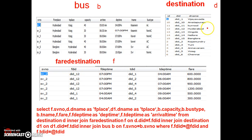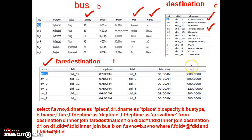The from place names and to place names are displayed from the destination table. Apart from that I want to display the capacity from the bus table, service number from the fare destination table, bus type (AC or non-AC) from the bus table, travel agency name from the bus table, fare from the fare destination table, departure time from the fare destination table, and arrival time from the fare destination table.